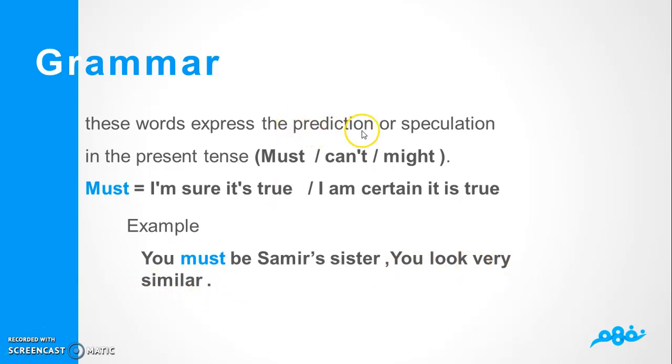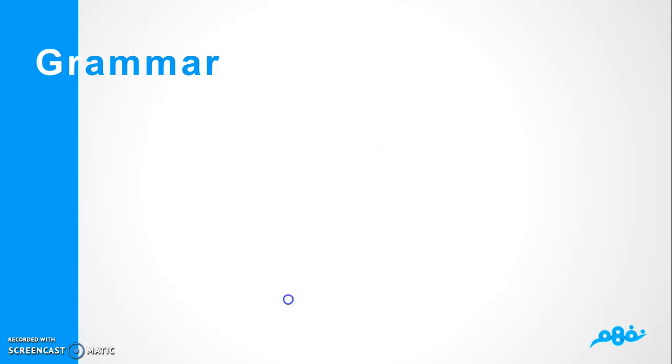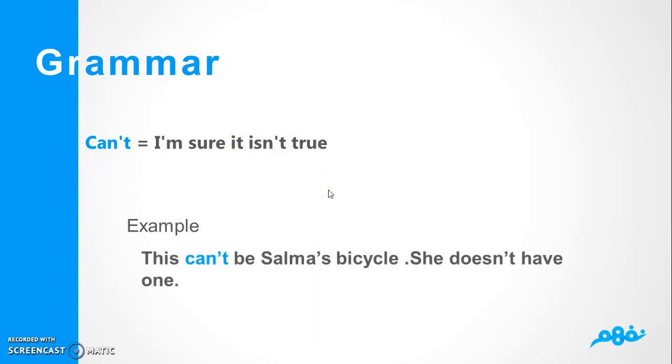Here we have: you look very similar, that's very a prediction or a speculation, so we use must. And here can't equals I'm sure it isn't true. It shows negation. We have example: This can't be someone's bicycle, she doesn't have one. That evidence, she doesn't have one, that makes me use can't, that equals I'm sure it isn't true.